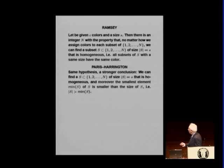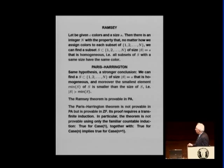And there's a little variant. You want to just add an innocuous condition that the minimum element in the set S is greater, is smaller than the number of elements in S. Well, what happens? The Ramsey theorem is provable in what is called Peano arithmetic, which is a model, a simple model, or arithmetic which corresponds to our intuition.